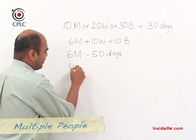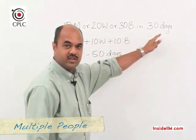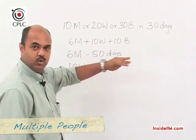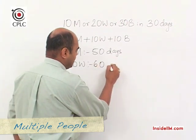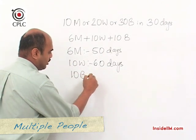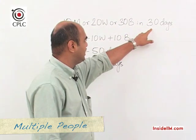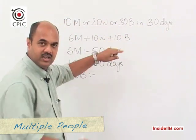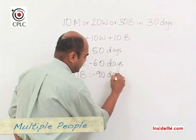For 10 women: if 20 women take 30 days, 10 women is half the number, so they will take double the number of days — 60 days. For 10 boys: 30 boys complete it in 30 days, so 1/3 the number of boys will take 3 times the number of days, which means 90 days.